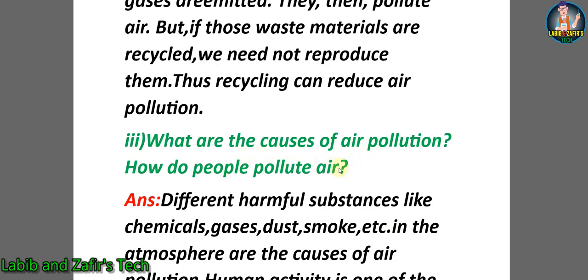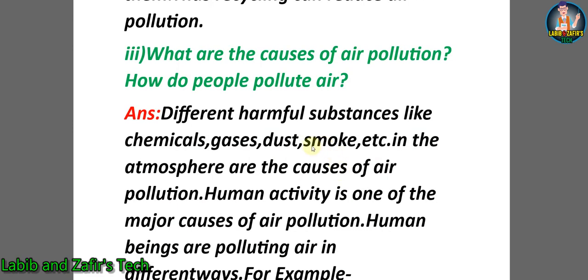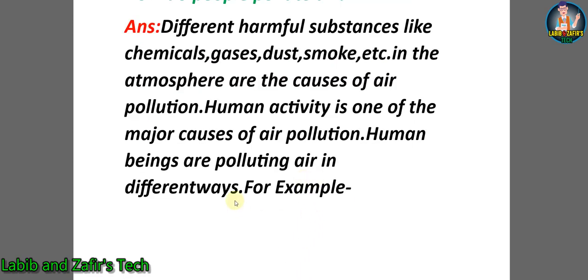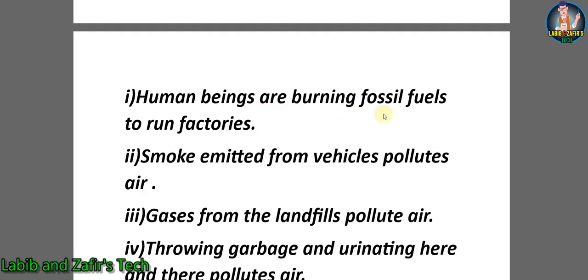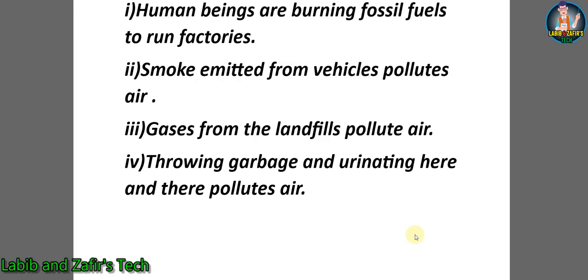Third question: What are the causes of air pollution? How do people pollute air? Answer: Different harmful substances like chemicals, gases, dust, smoke in the atmosphere are the causes of air pollution. Human activity is one of the major causes. Human beings are polluting air in different ways. For example: 1) Burning fossil fuels to run factories, 2) Smoke emitted from waste gas pollutes air, 3) Gases from landfills pollute air, 4) Throwing garbage and urinating here and there pollutes air.